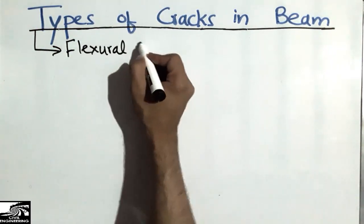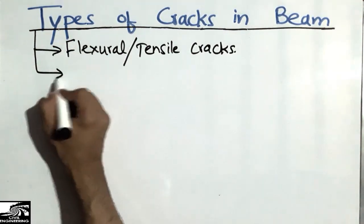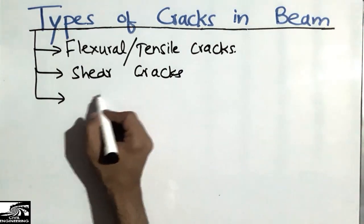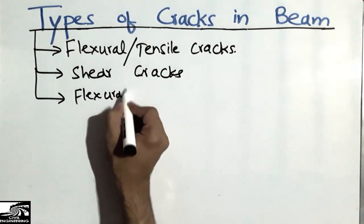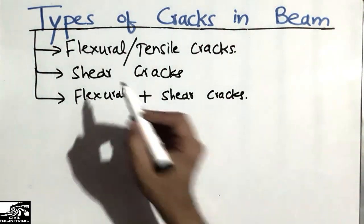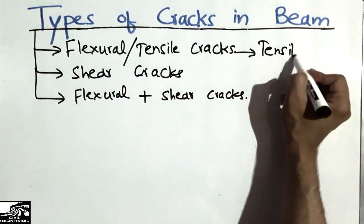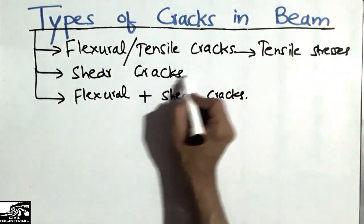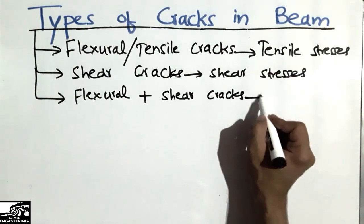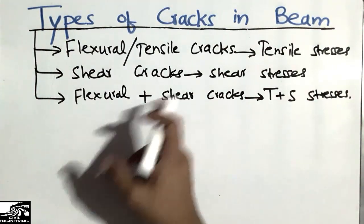The first type is the flexure or tensile cracks — the most predominant cracks in beams. The second one is the shear cracks, which mostly occur at the supports. The last one is the flexure and shear cracks combined — it is the summation of both types. Flexure and tensile cracks mostly occur due to tensile stresses acting on the beam, shear cracks are mostly due to shear stresses, while the flexure and shear cracks occur due to a combination of tensile and shear stresses.